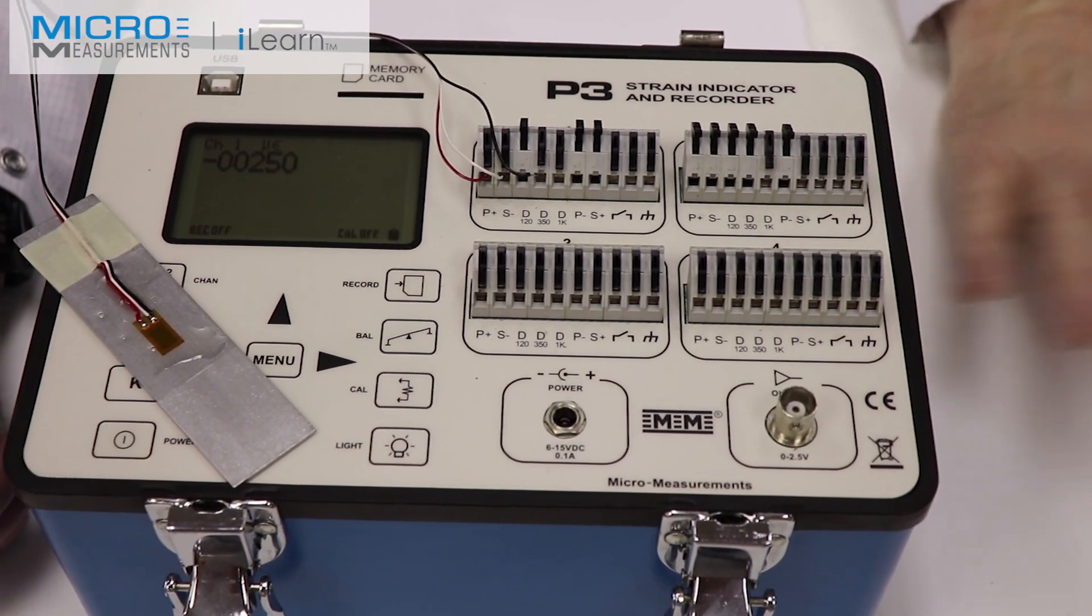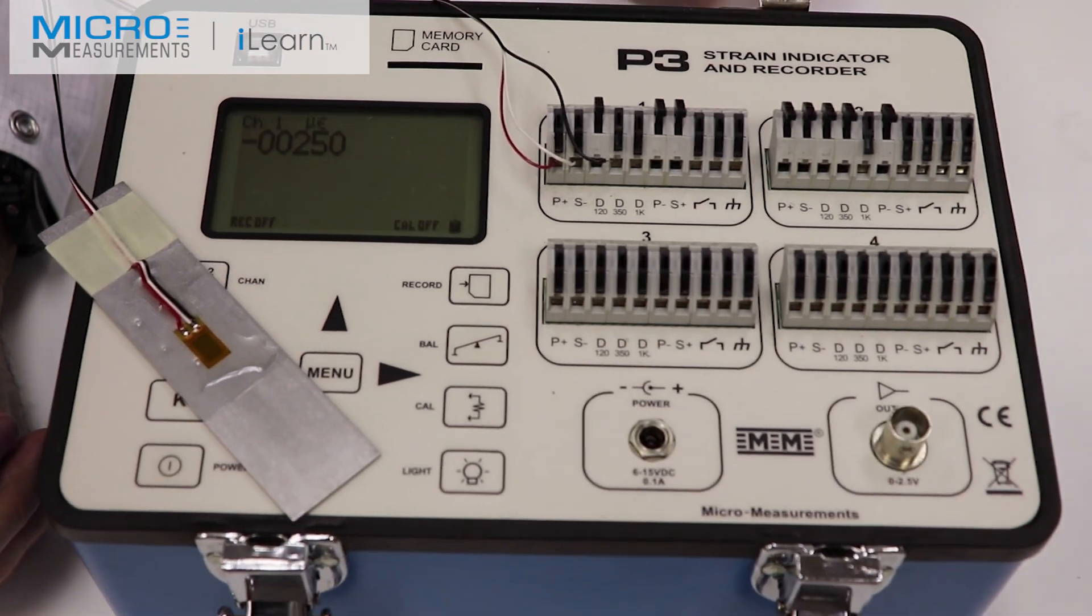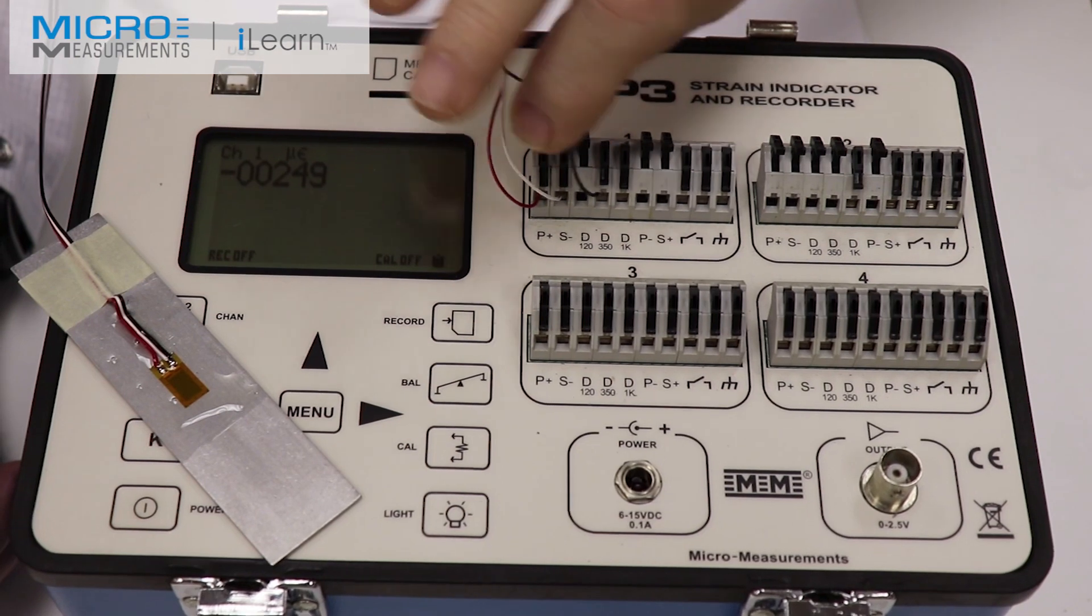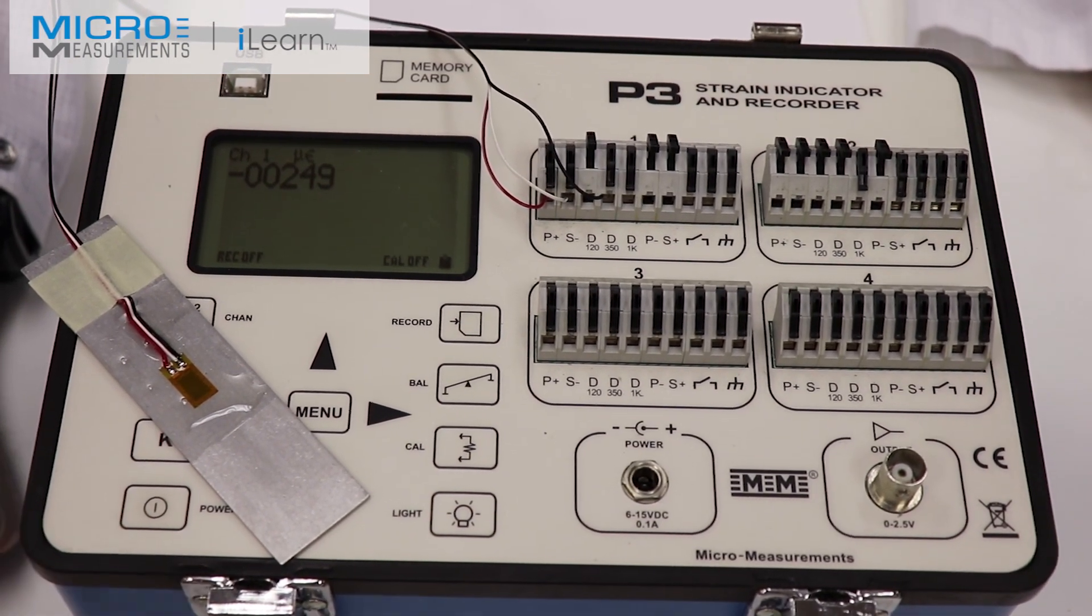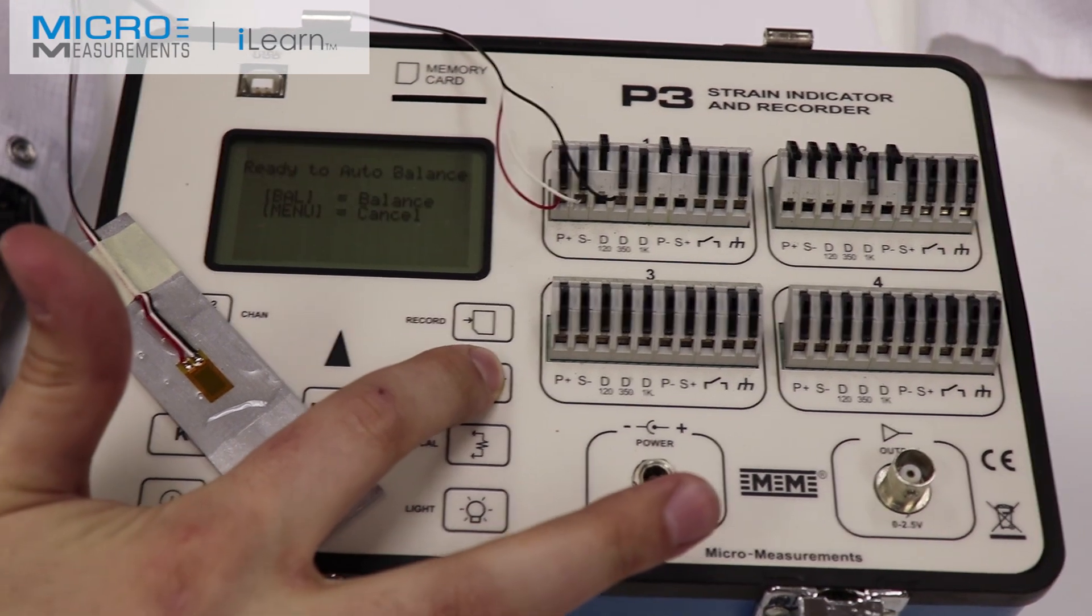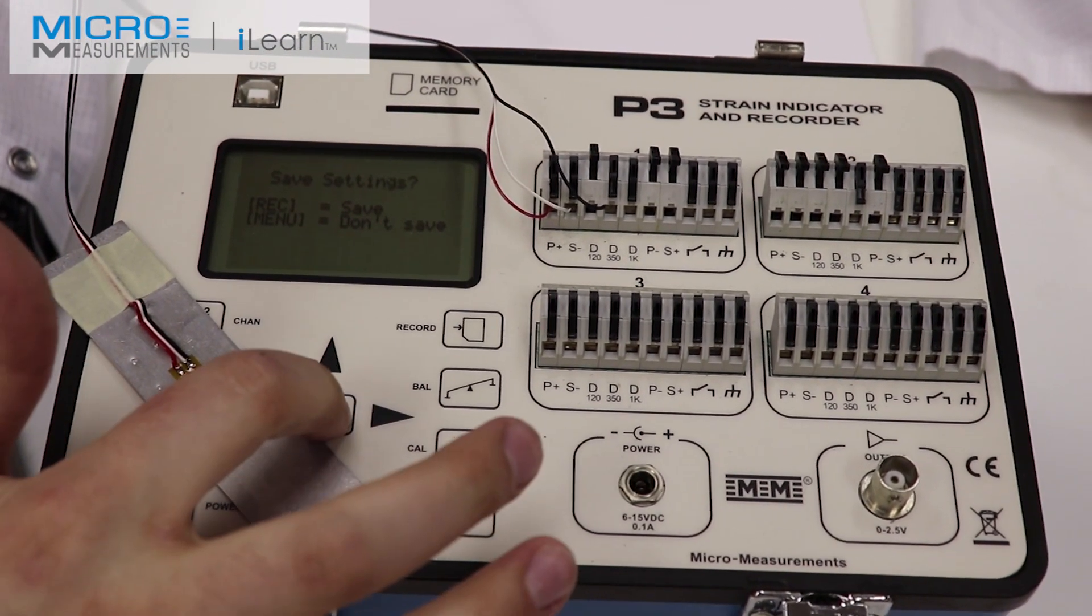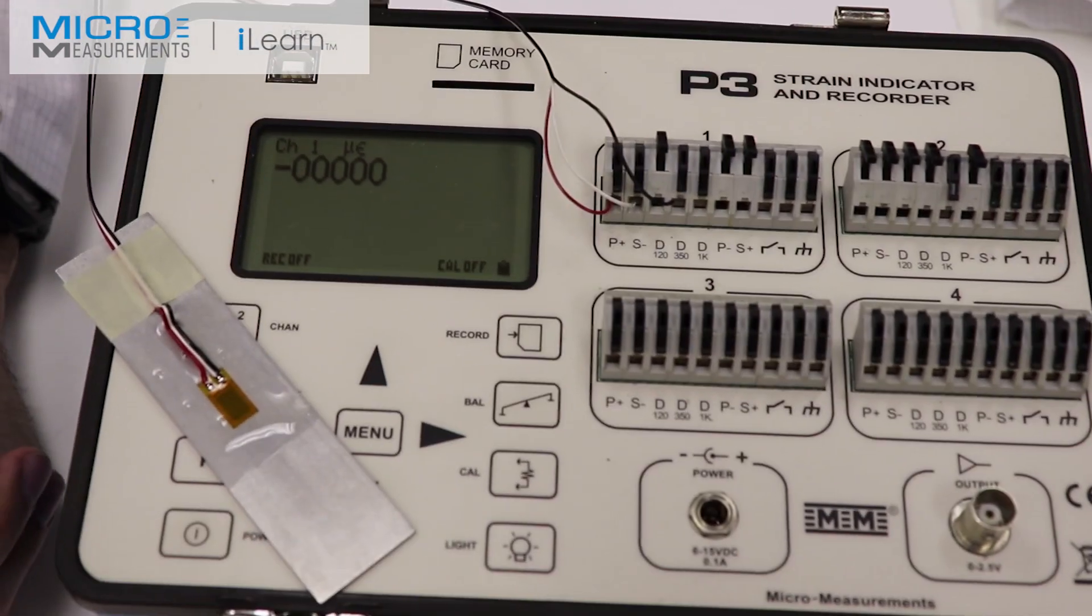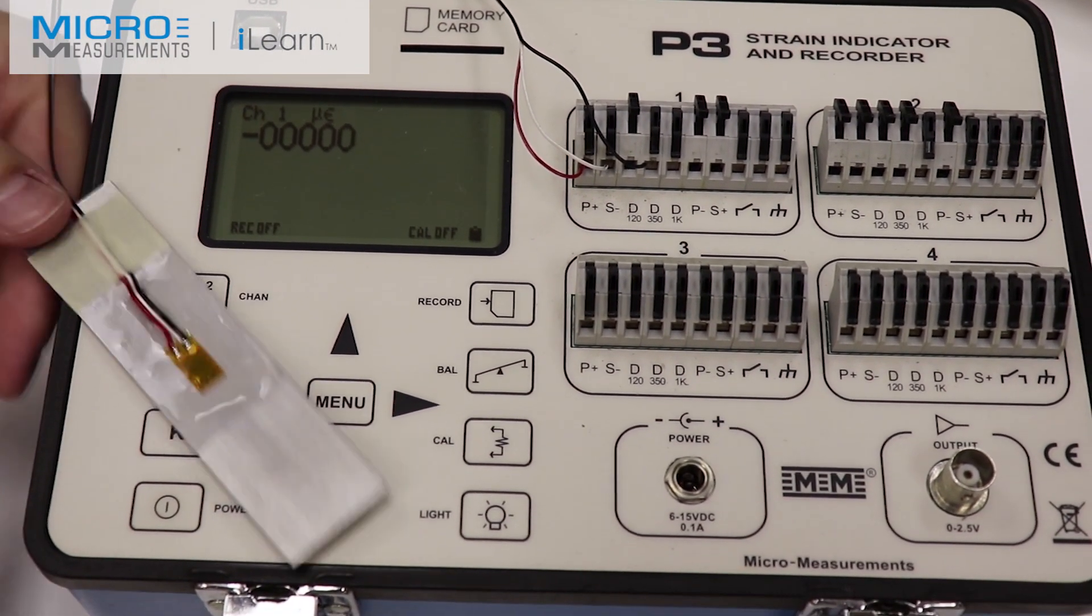We've completed our installation. Our M-Coat A is cured and we've hooked up to the P3 strain indicator and recorder. It's a quarter bridge, 350 ohm. Note the three wire configuration. Colin's going to balance that out. Now look at the stability of that. It's sitting there right at 0, 0, 0.